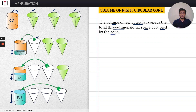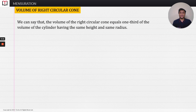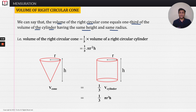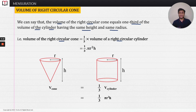So from this we can conclude that the volume of the cylinder is equal to three times the volume of the cone. Therefore, the volume of a right circular cone is equal to one third of the volume of a right circular cylinder. Since the volume of a right circular cylinder is πr²h, the volume of a right circular cone is equal to one third πr²h. This is the formula for finding the volume of a right circular cone.